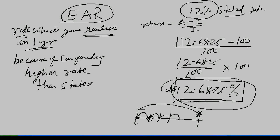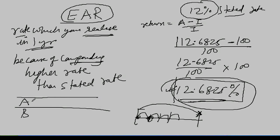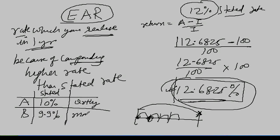In an exam question: Investment Product A has a stated rate of 10% compounded quarterly; Investment Product B has a stated rate of 9.9% compounded monthly. Should you invest in A or B? If I change B's rate to 9.5%, what is your answer? What if B's rate is 9.85%? You need to compare the effective annual rates to decide, not just the stated rates.